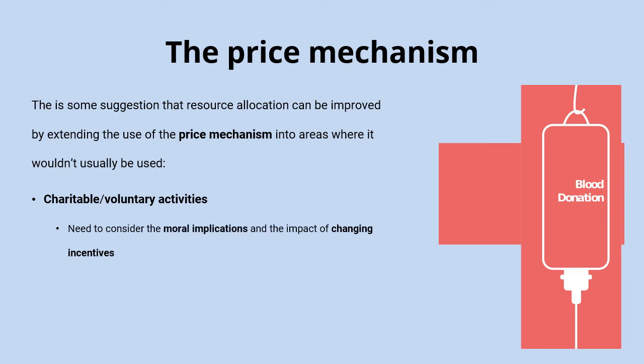There are a few problems with this. First, there are moral implications — for example, most people would agree it would be highly morally problematic to have people donating a kidney simply because they needed the money. There's also quite a lot of evidence that introducing a payment could actually reduce the number of people who come forward, because most people give blood for philanthropic reasons. If you introduce a payment — say £10 — you take away the generous aspect, and people start to objectively weigh up costs and benefits. Someone who was happy to give blood for free might decide that £10 isn't enough once the relationship becomes a cold transaction.